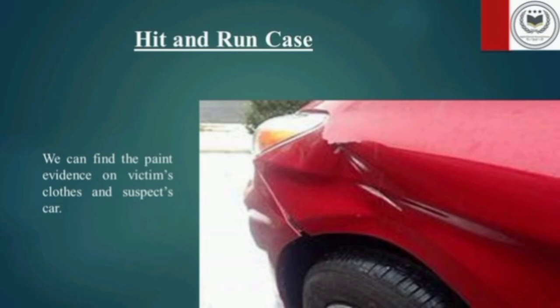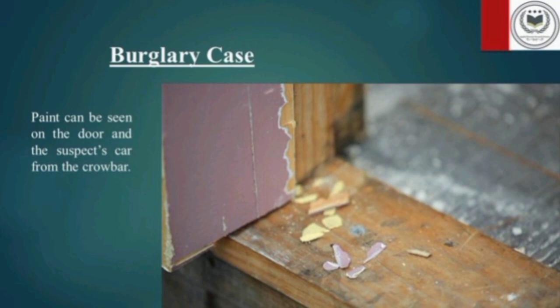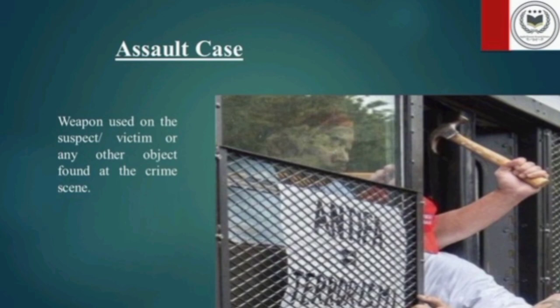Some examples of where paint evidence could prove useful are hit and run cases, burglary cases, assault cases, and many more. In a hit and run case, we can find paint evidence on the victim's clothes and the suspect's car. In a burglary case, paint can be seen on the suspect's car from a crowbar. In assault cases, a weapon used on the suspect or victim, or any other object found at the crime scene, could be used as paint evidence.